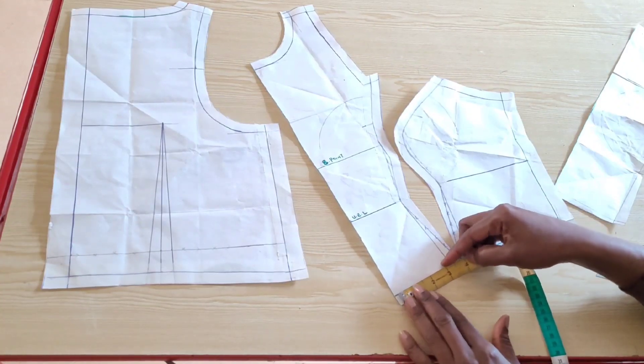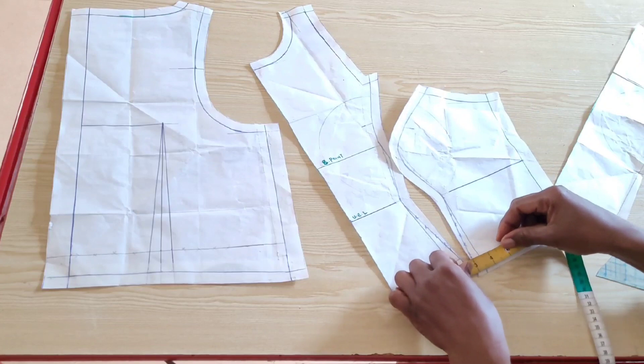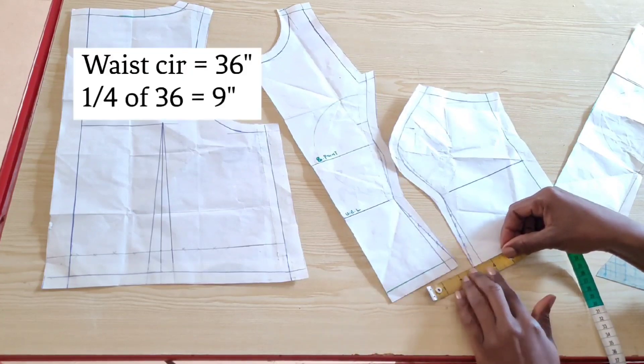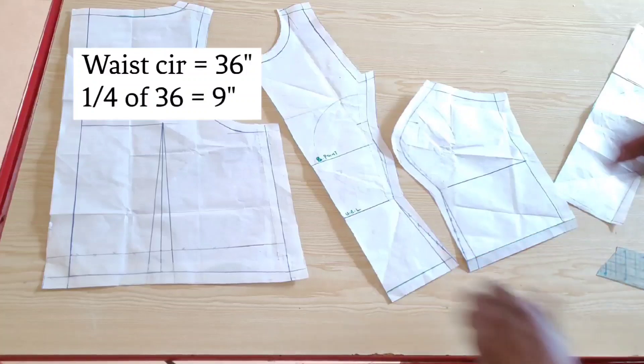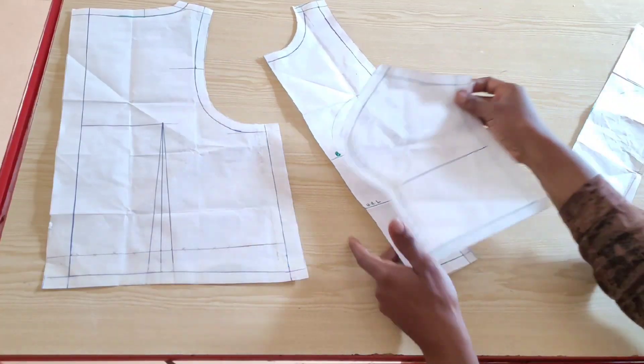So guys, the correction has been made, and you can see here I have nine inches, one quarter of the waist circumference of my client. So we'll move on to the lower part of the dress, which is the skirt.